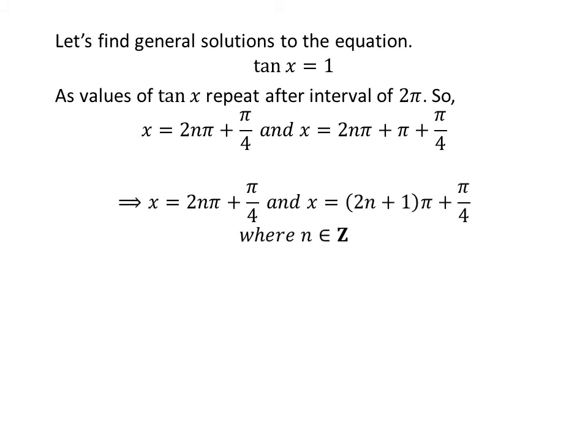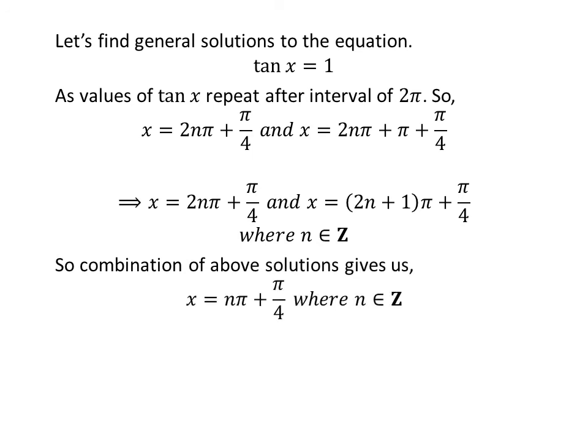Further simplification gives us the general solutions as 2 times n times pi plus pi upon 4, and 2 times n plus 1 times pi plus pi upon 4. Since n is an integer and 2n plus 1 is an odd integer for any n, the union of these two sets is the set of all integers. So the general solution to the equation is n times pi plus pi upon 4, where n is an integer.